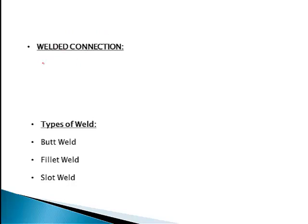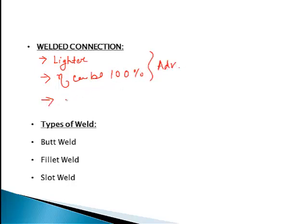Why welded connection? Previously you have seen the bolted and riveted connection. Welded connection is important because it makes the connection lighter. The efficiency can be 100 percent — this advantage is easier to achieve with welded connections. However, there is also a disadvantage: welded connections are fixed. In case of bolted and riveted connections, if something is incorrect you can redo them, but welded connections cannot be easily undone.